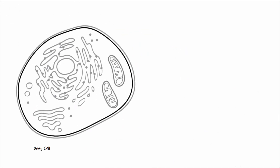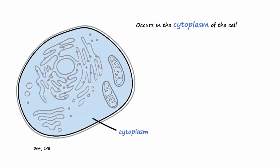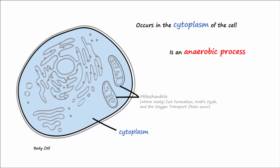It is important to note that the entire process of glycolysis occurs in the cytoplasm of the cell, unlike the other steps of metabolism, which take place in different areas of the mitochondria. It is also important to keep in mind that glycolysis is an anaerobic process, meaning that it can occur without the presence of oxygen.